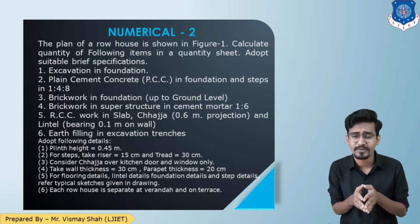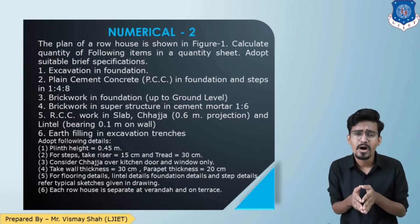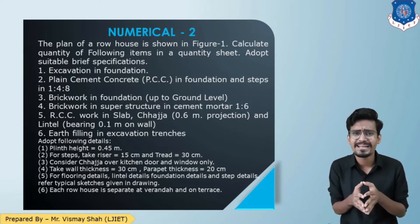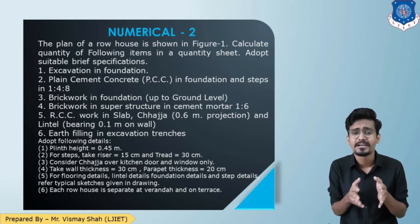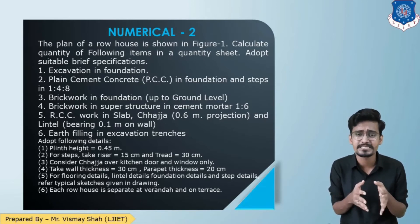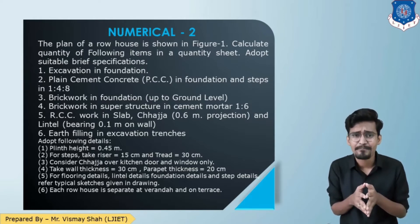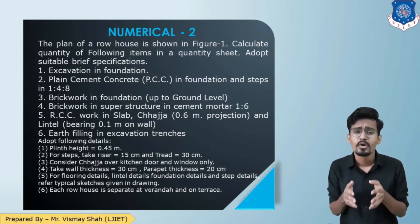The riser is 15 centimeter and tread is 30 centimeter. Consider chajja over kitchen door and window only. Wall thickness is 30 centimeter and parapet wall thickness is 20 centimeter. Flooring details, lintel details, and other typical foundation details are taken from the detail section given in the drawing. Each row house is separated at veranda and terrace.